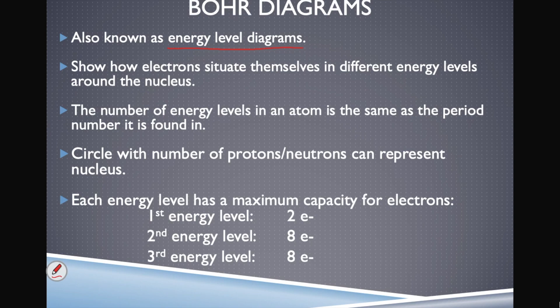Energy level diagrams give us a visual representation of how electrons situate themselves in different energy levels around the nucleus. Importantly, the number of energy levels in an atom is the same as the period number it's found in. There are seven periods in the periodic table, so the maximum number of energy levels an atom can have is seven.